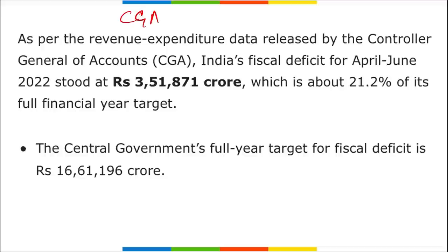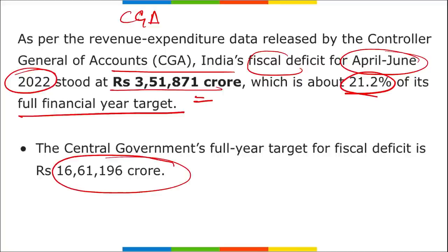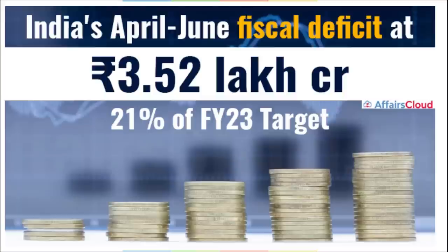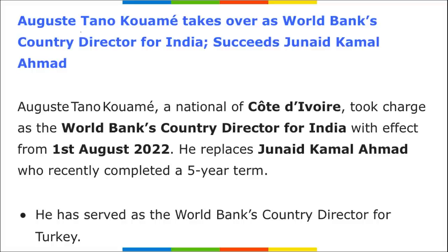As per the Controller General of Accounts (CGA), India's fiscal deficit for April to June 2022 stands at Rs. 3,51,871 crore — approximately 21.2% of the full financial year target. The full year's fiscal deficit target is Rs. 16,61,196 crore. Remember: 3.52 lakh crore rupees is the fiscal deficit achieved for April–June 2022, which is 21.2% of the annual target.